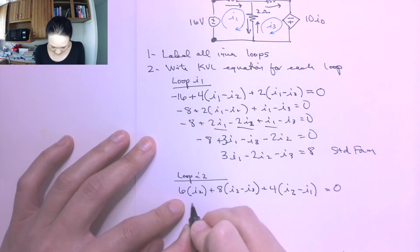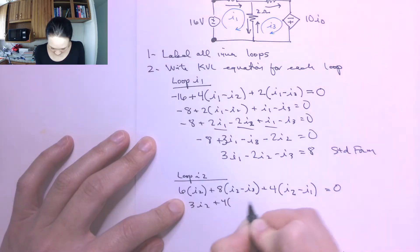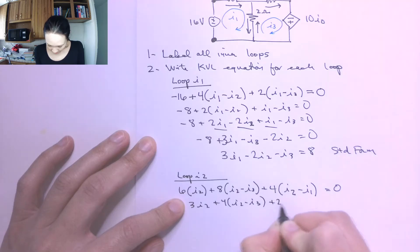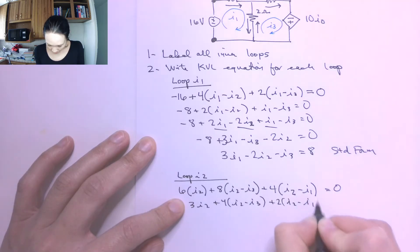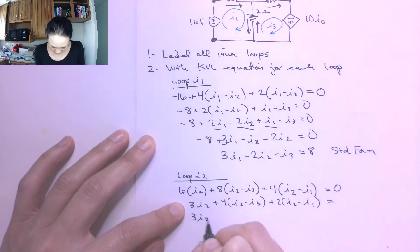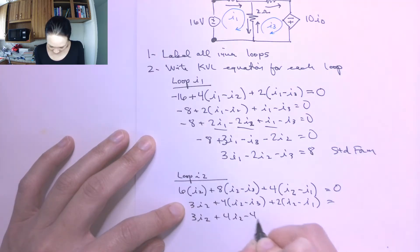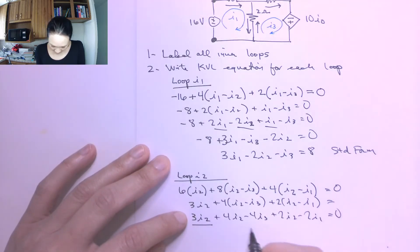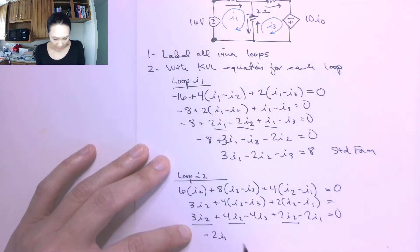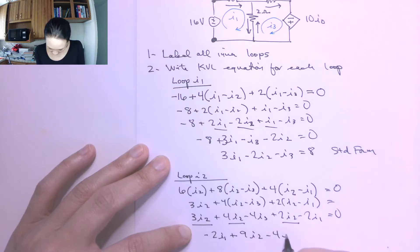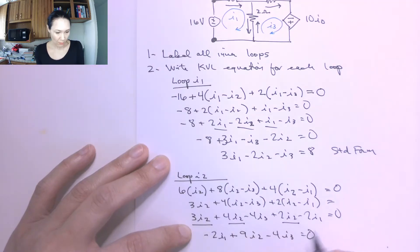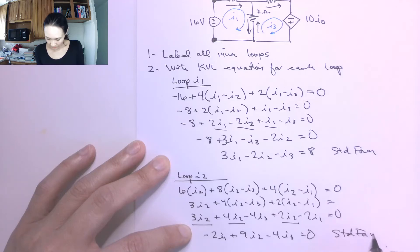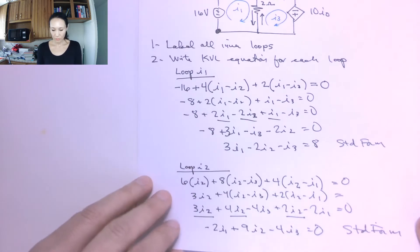Dividing everything by 2: 3I2 plus 4 times (I2 minus I3) plus 2 times (I2 minus I1), which gives negative 2I1 plus 9I2 minus 4I3 equals 0. This is already in standard form and ready to be plugged into my matrix.